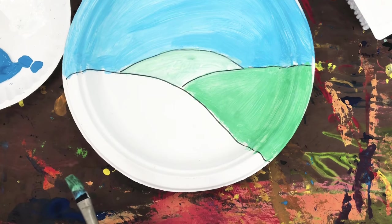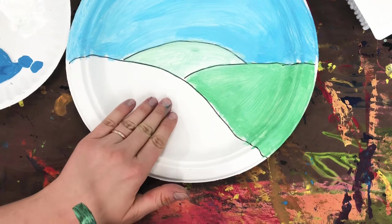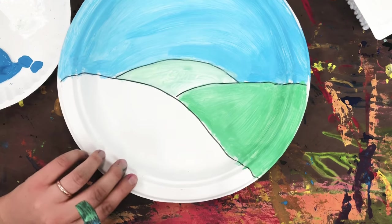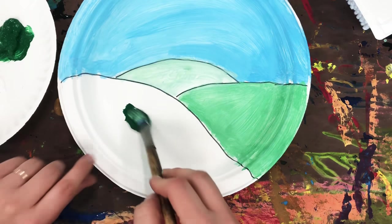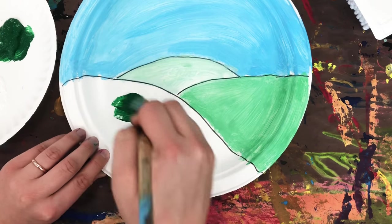Okay, now I'm ready for my last hill. And I want this hill in the foreground to be the darkest, so I'm not going to get any white paint. I'm just going to get the green paint and carefully paint this hill.